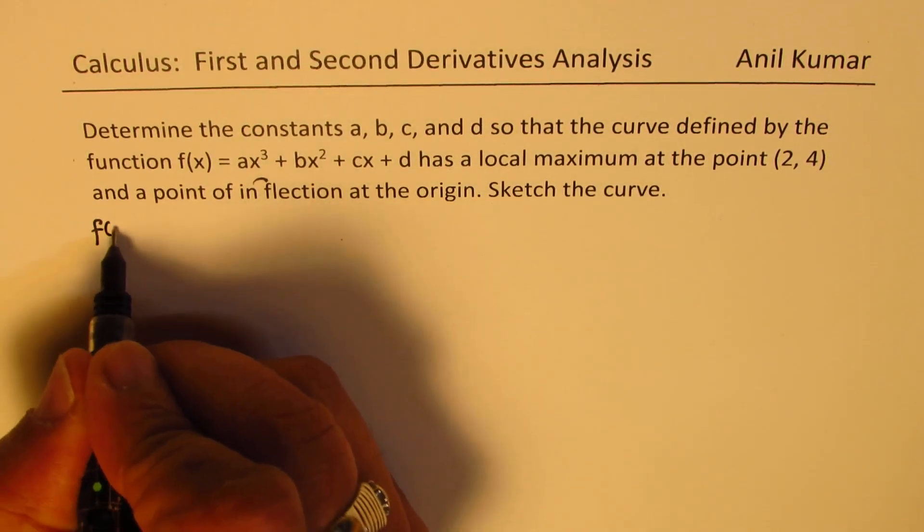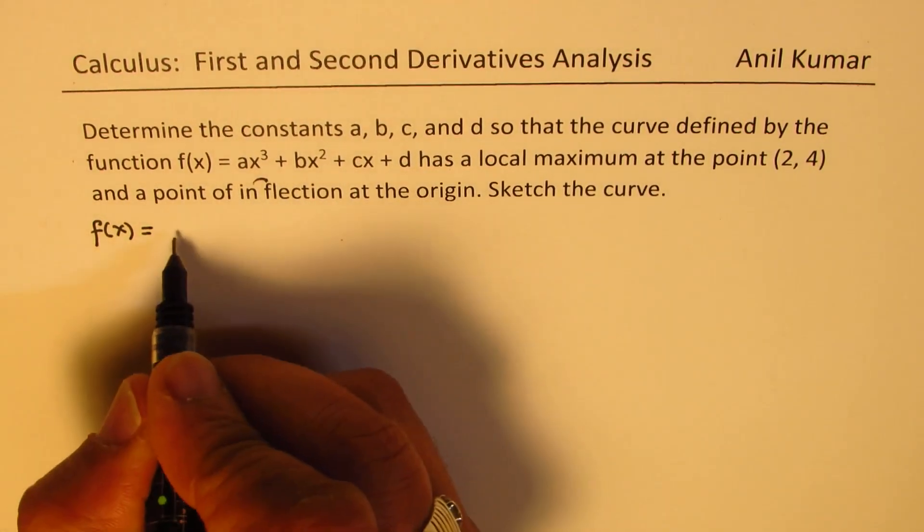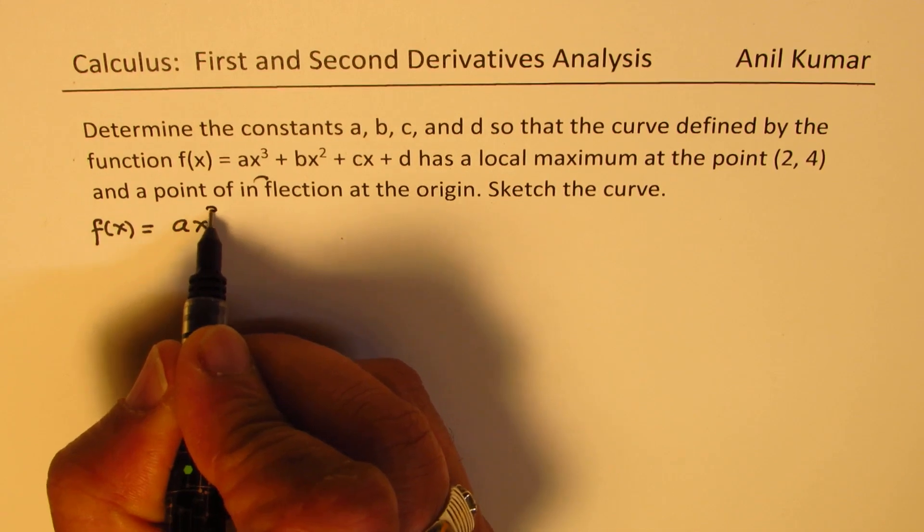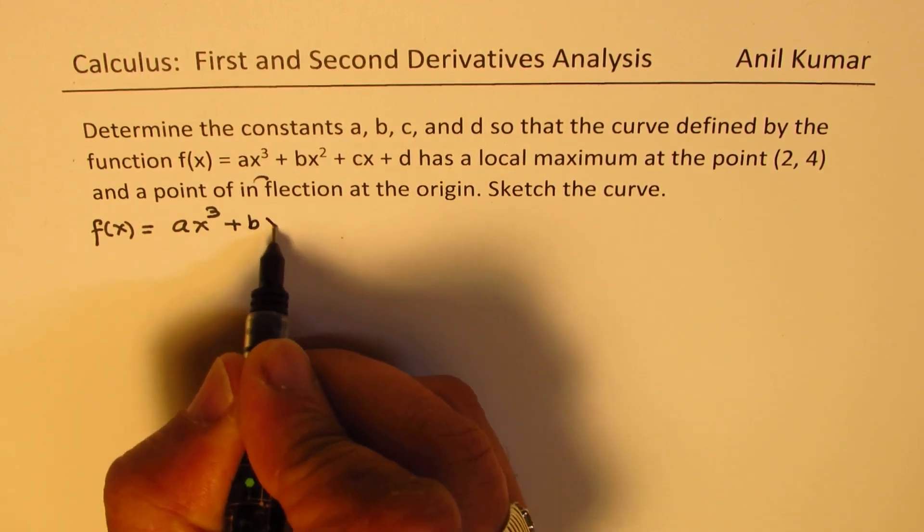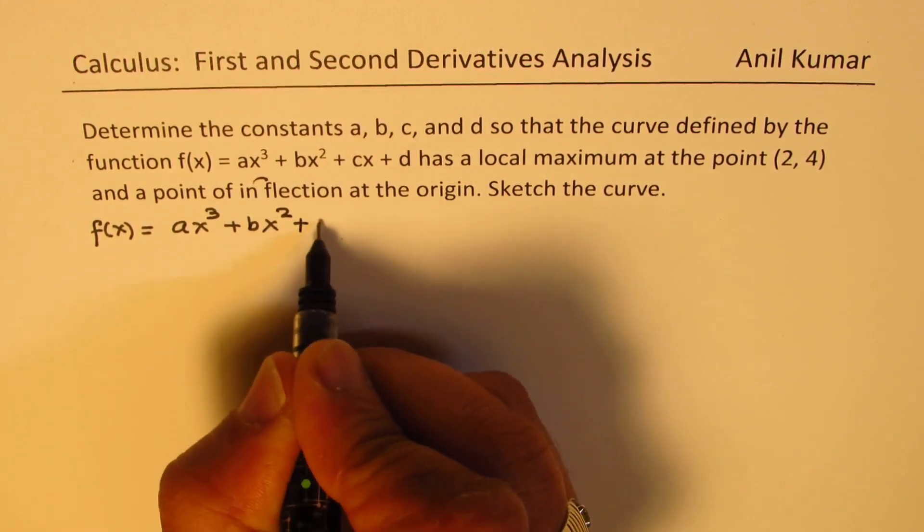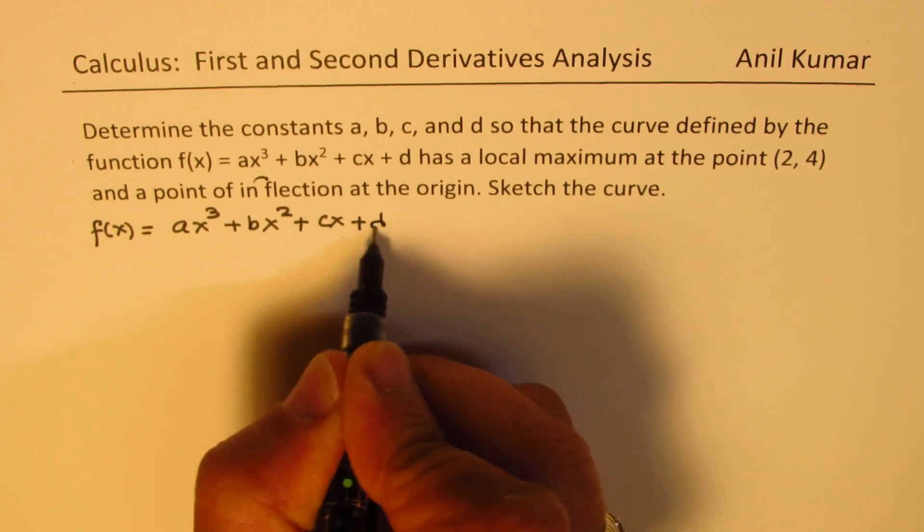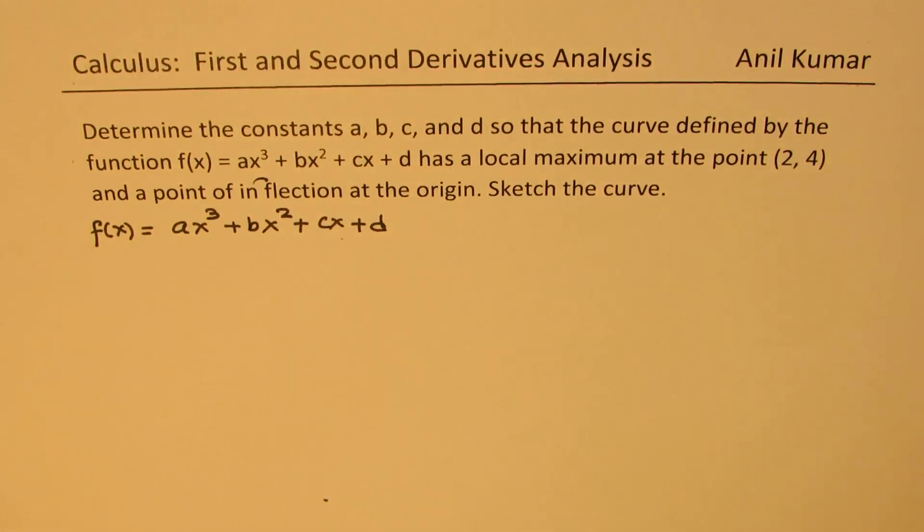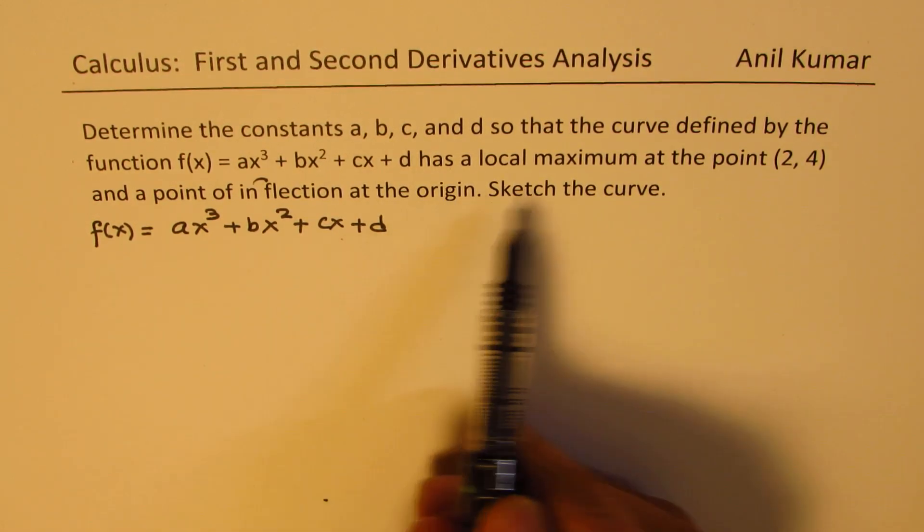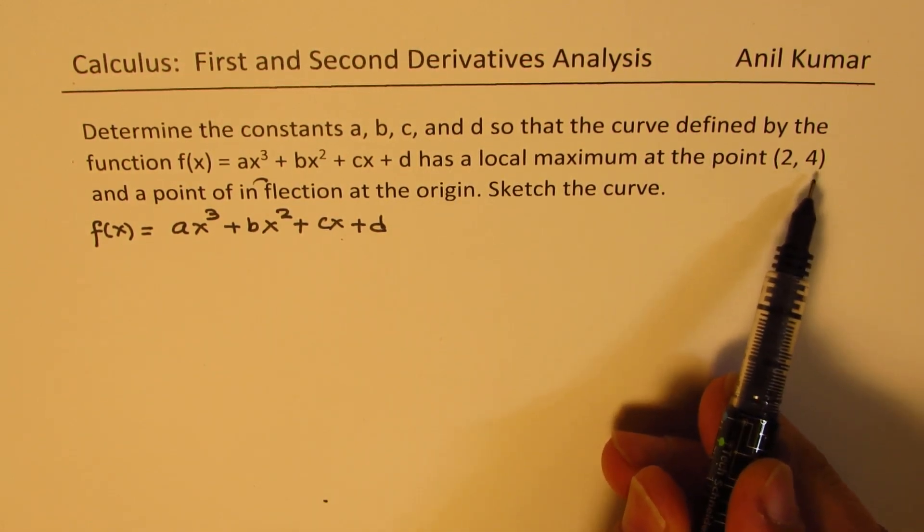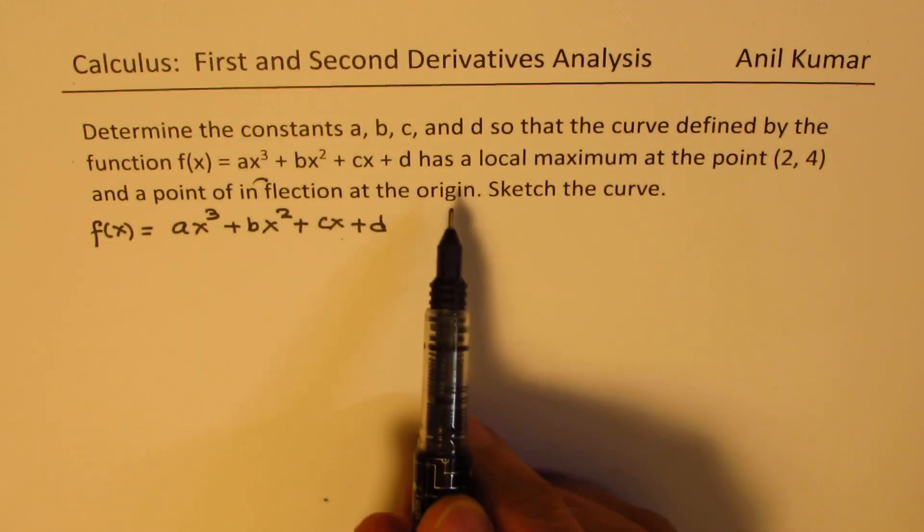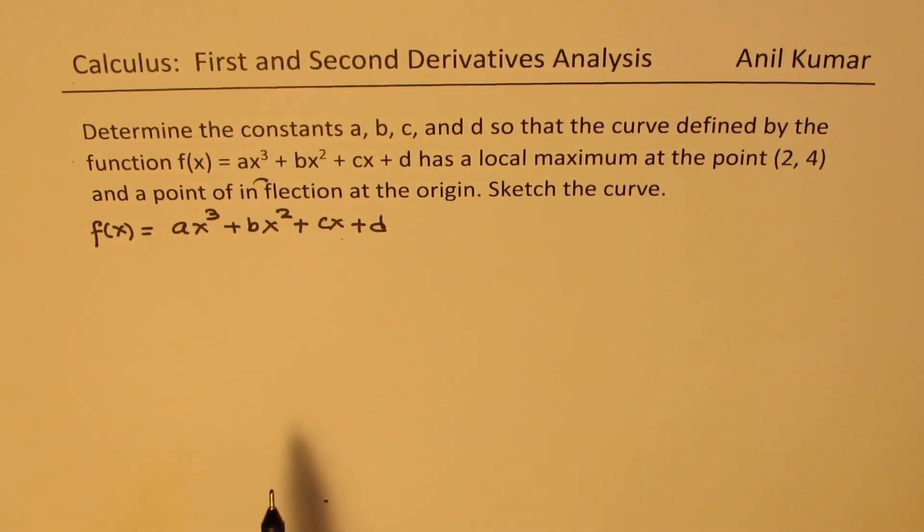We are given the function, which is basically a cubic function ax³ + bx² + cx + d. There are four unknowns, so we need four equations. We are given two points, one is the origin, the other one is (2, 4) on the curve. So these two points will give us two equations.